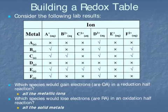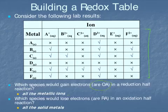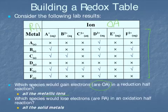Let's take our knowledge of strong oxidizing agents and strong reducing agents and create a redox table based on empirical lab results. Here we have six different metal ions reacting with six different solid metals. The first thing we need to decide is what are our oxidizing agents and what are our reducing agents. Because these are metallic ions, they all tend to gain electrons, so all our metallic ions are our oxidizing agents. On the other hand, the solid metals are going to be our reducing agents.